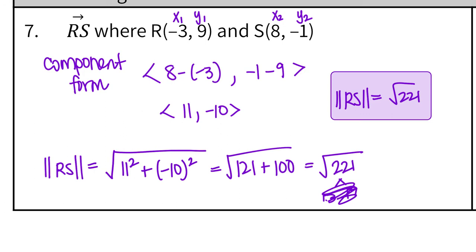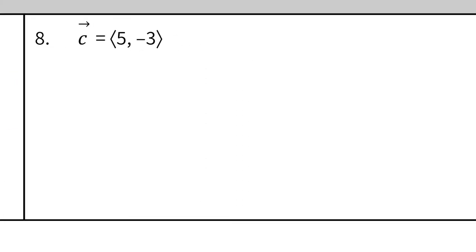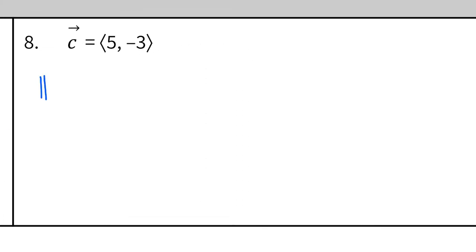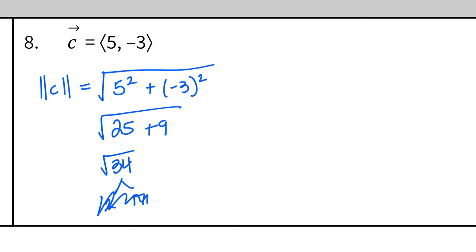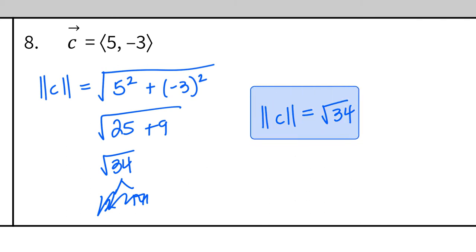The next one is already in component form so it's a lot easier. For the magnitude of vector c: square root of 5 squared plus negative 3 squared, so 25 plus 9, which is square root of 34. The only way to separate 34 is 2 times 17 — both prime — so the magnitude stays as square root of 34. You should always check to see if it's going to simplify.